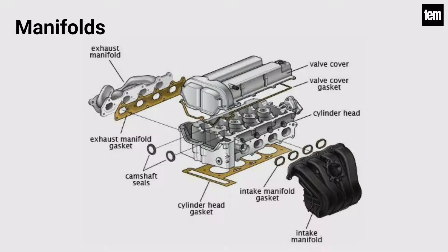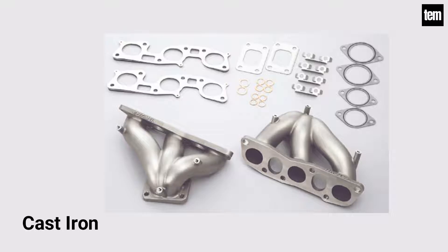Manifolds: There are separate sets of pipes attached to the cylinder head which carry the air-fuel mixture and the exhaust gases. These are called manifolds. They are generally made of cast iron so that they can withstand the high temperature of the exhaust gases.